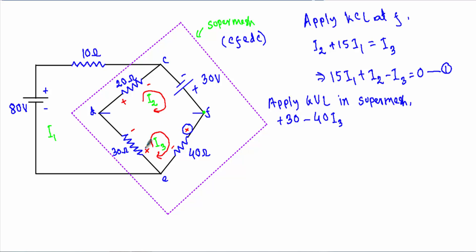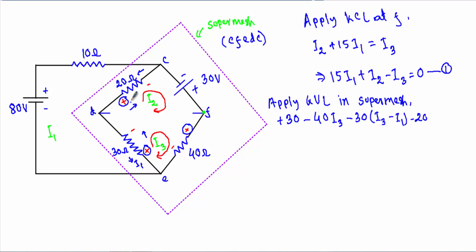After that I encounter this 30 ohm and its positive terminal, so its voltage will be negative. From this direction I have current I3 and from the other direction I have loop current I1, which is outside of this super mesh. I assume I3 is greater than I1, so I take minus 30·(I3 minus I1). After that I encounter this 20 ohm resistor and its positive terminal, so its voltage will also be negative — minus 20·(I2 minus I1) equals zero. This is equation number two.